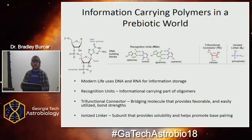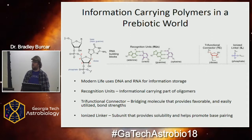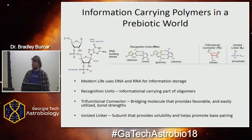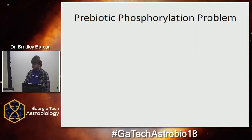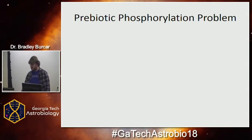In our center, we work on changing out these pieces from RNA and DNA and putting other pieces in there, seeing how this affects properties and if you can have life without the specific backbone as we see in modern biochemistry. We've had good success replacing the bases for the recognition units and the tri-functional connectors, but we've run into problems when we try to change that ionized linker. So as opposed to trying to change it, some of us in the lab are trying to embrace it — what if we had phosphate at the origins and it got incorporated into the molecules?